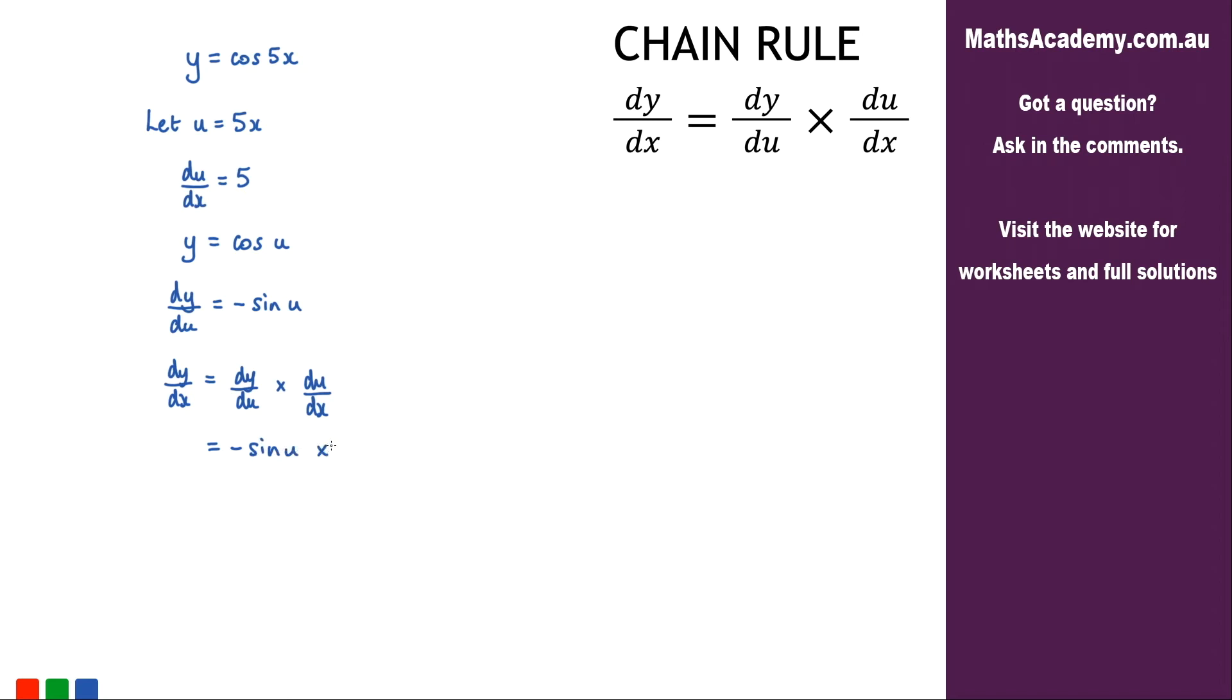And we're going to multiply that by du by dx, and du by dx, what's up here, that is 5. So multiplying by 5. Now let's go ahead and simplify that a little bit. So that's negative 5 sine of u.